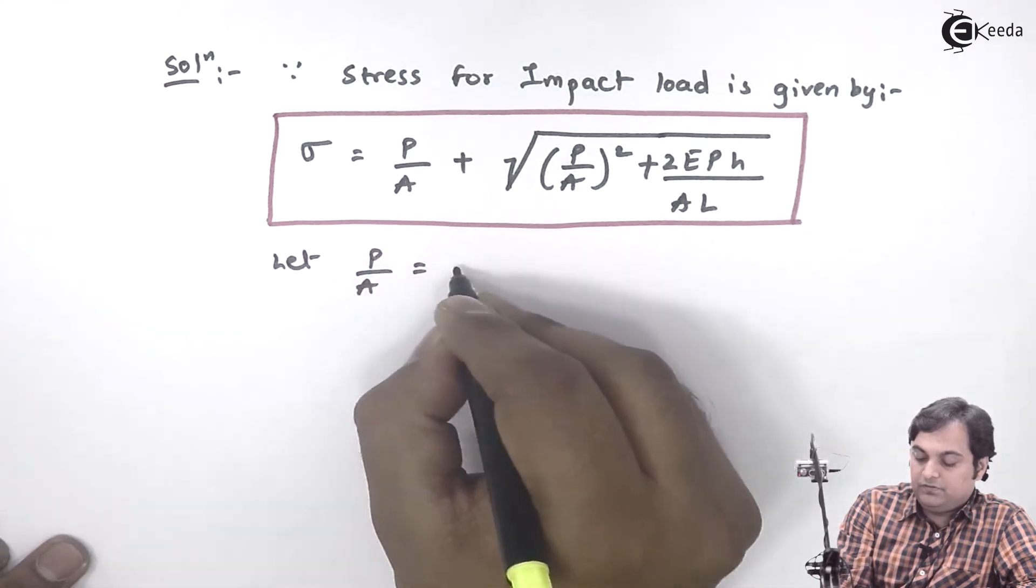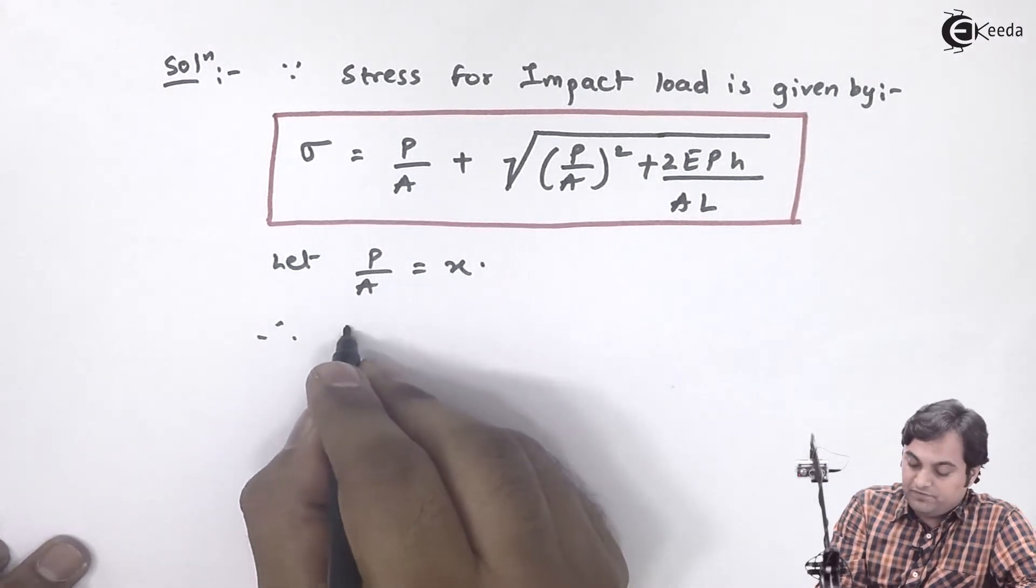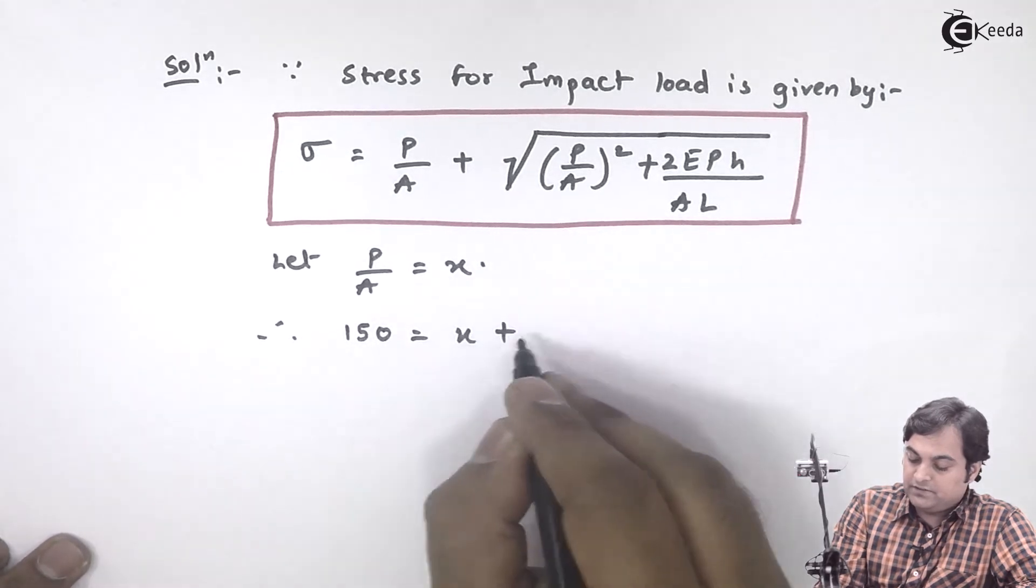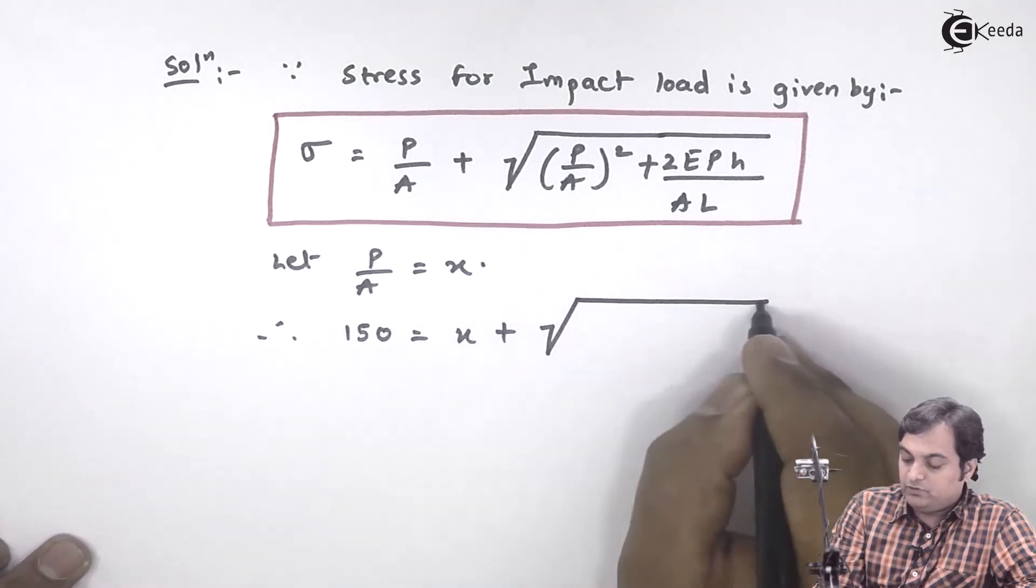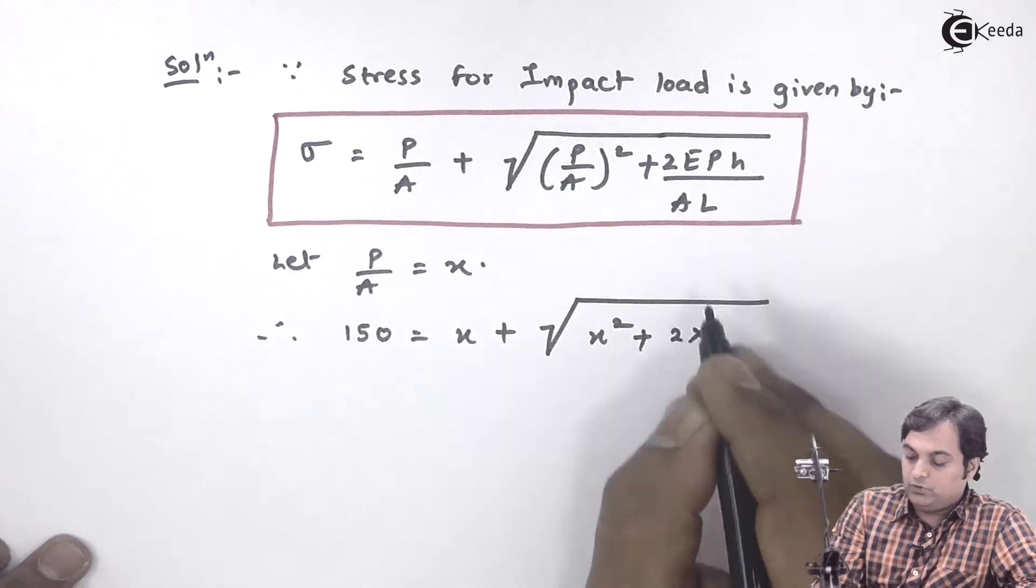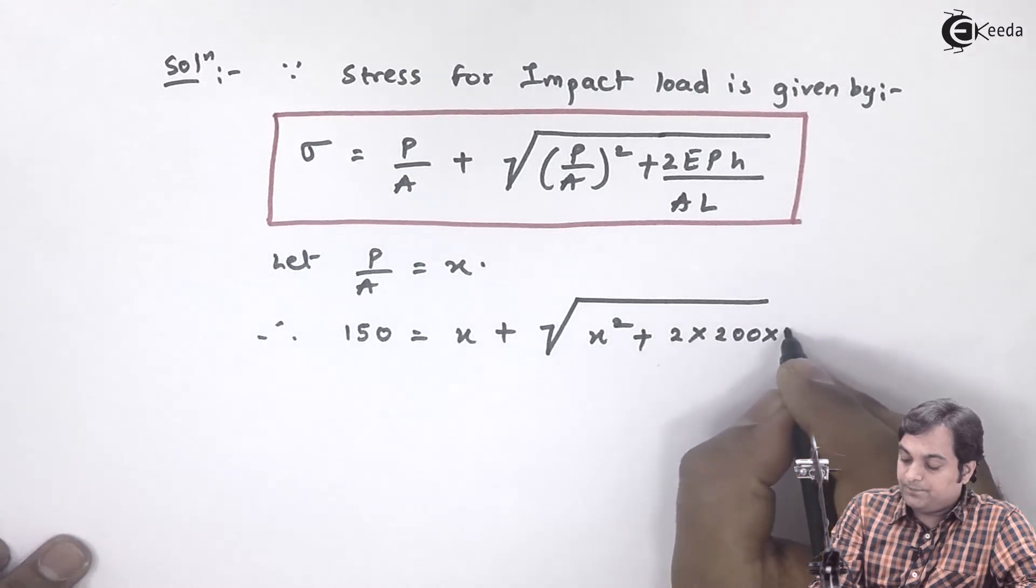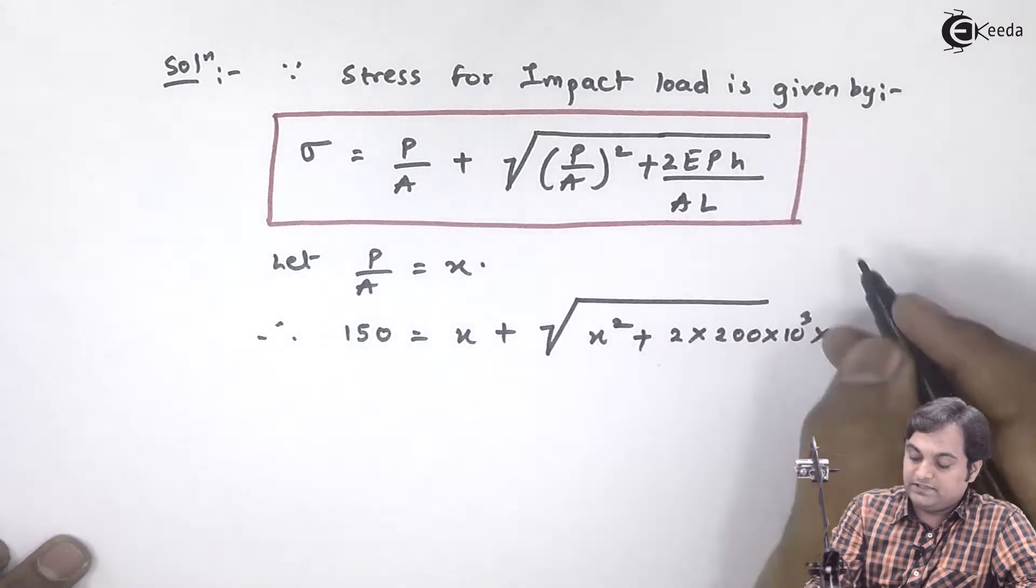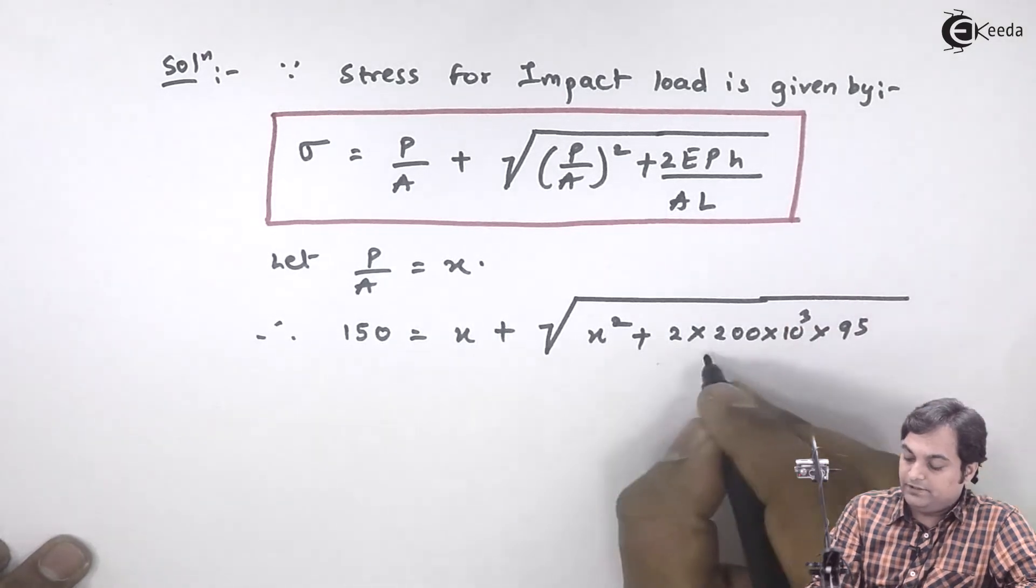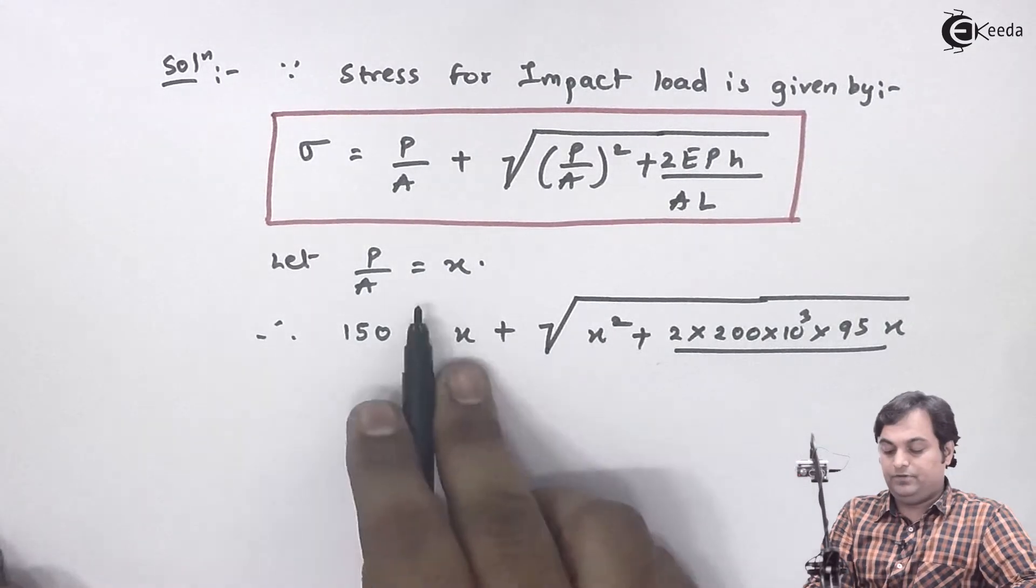be equal to X. Therefore, stress is given as 150 = X + √[X² + 2 × 200×10³ × 95 / (X × 1.4×10³)].